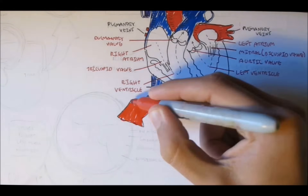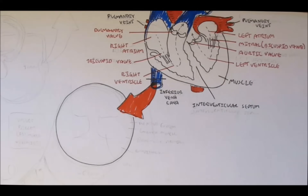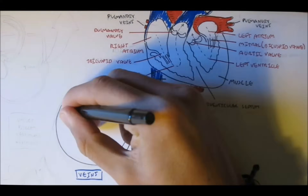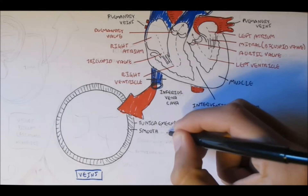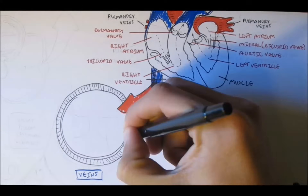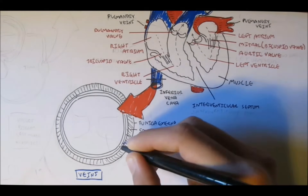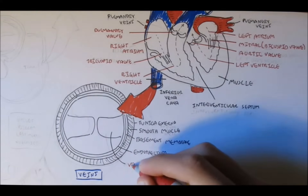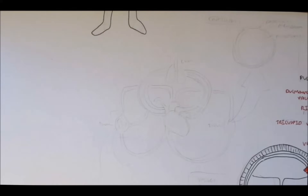Veins, on the other hand, are not elastic and not as muscular. From the outside, they consist of a tunica externa composed of thick collagen fibers, a tunica media composed of just a small amount of smooth muscle, and a tunica intima with a basement membrane and endothelial cells. Most importantly, veins also consist of valves to prevent backflow — especially important when blood is being brought back to the heart, particularly from the lower body.